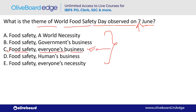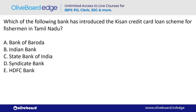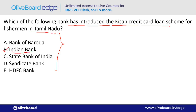Which bank introduced the Kisan Credit Card loan scheme for fishermen in Tamil Nadu? The answer is Indian Bank — option B. Indian Bank's headquarter is in Chennai, which is in Tamil Nadu. Note: Indian Overseas Bank's headquarter is also in Chennai.